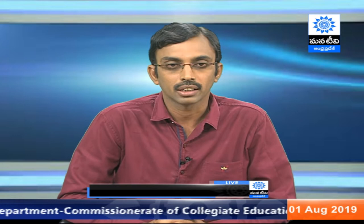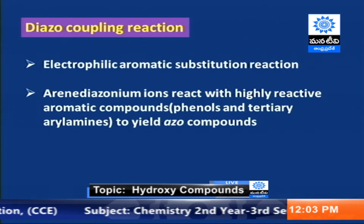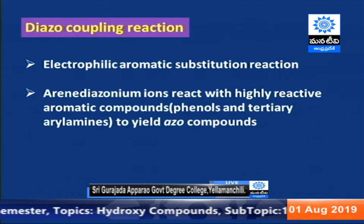Diazo coupling reaction is basically an electrophilic aromatic substitution reaction. This reaction occurs when arene diazonium ions are reacted with highly reactive aromatic compounds — that is, phenols and tertiary amines. The product obtained is an azo compound containing the N=N bond. The two aromatic systems will be in conjugation through the N=N bond. Therefore, the obtained product will have a characteristic color, by means of which we can determine the primary aromatic amine and also beta-naphthol.